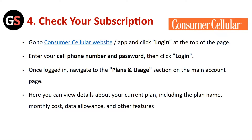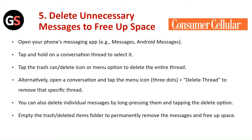Check your subscription. Go to the consumer cellular website or app and click login at the top of the page. Enter your cell phone number and password, then click login. Once logged in, navigate to the plans and usage section on the main account page. Here you can view details about your current plan including the plan name, monthly cost, data allowance, and other features.